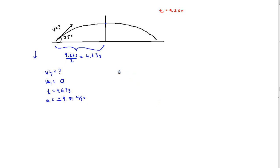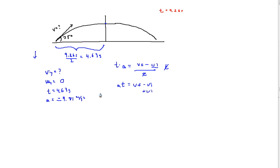Looking at the kinematics equation, the formula that has initial velocity, final velocity, time, and acceleration is: acceleration equals final velocity minus initial velocity over time. We want to isolate VI. First, multiply both sides by T to get rid of the denominator, giving us AT equals VF minus VI. Then add VI to both sides and subtract AT from both sides. This gives us VI — the initial y-velocity — equals the final velocity minus acceleration times time.